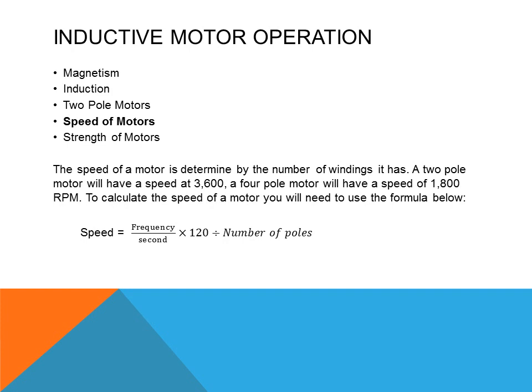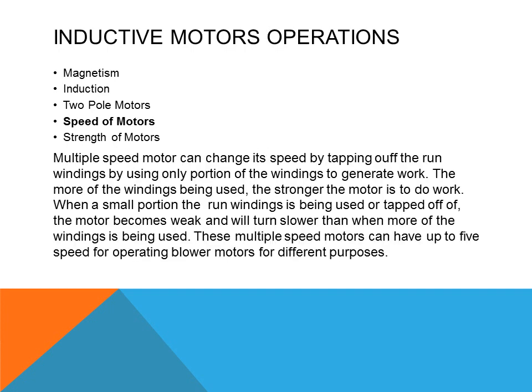The speed of a motor is determined by the number of poles it has. A two-pole motor will have a speed of 3,600 RPM, while a four-pole motor will have a speed of 1,800 RPM. To calculate the speed of a motor, use the formula: speed equals frequency divided by seconds, times 120, divided by the number of poles. Multiple speed motors can change speeds by tapping off the run windings — using only a portion of the windings to generate work. The more windings being used, the stronger the motor; when a small portion is tapped off, the motor becomes weaker and turns slower.